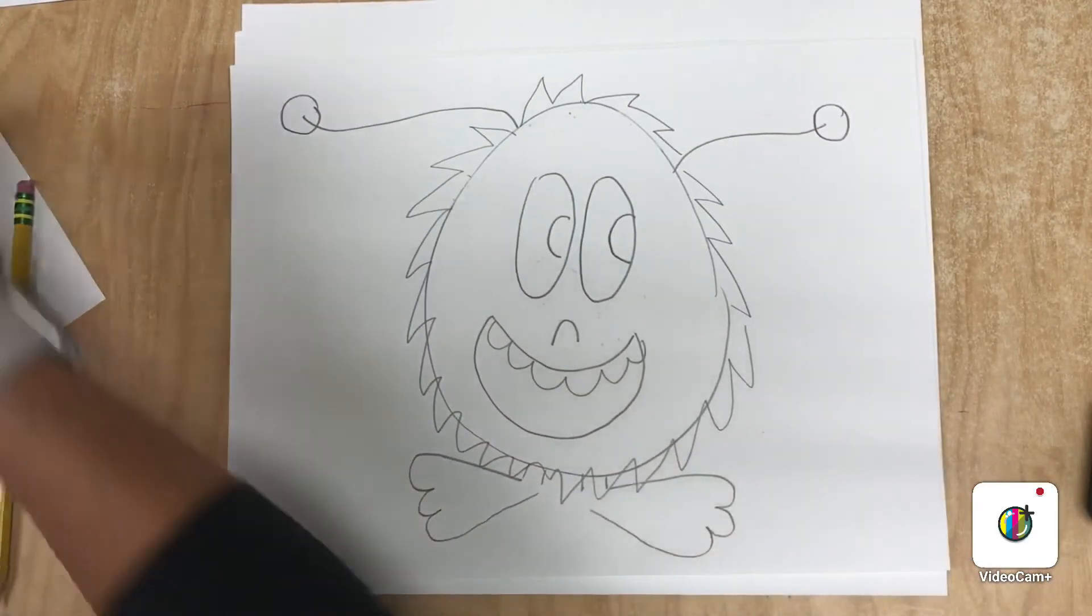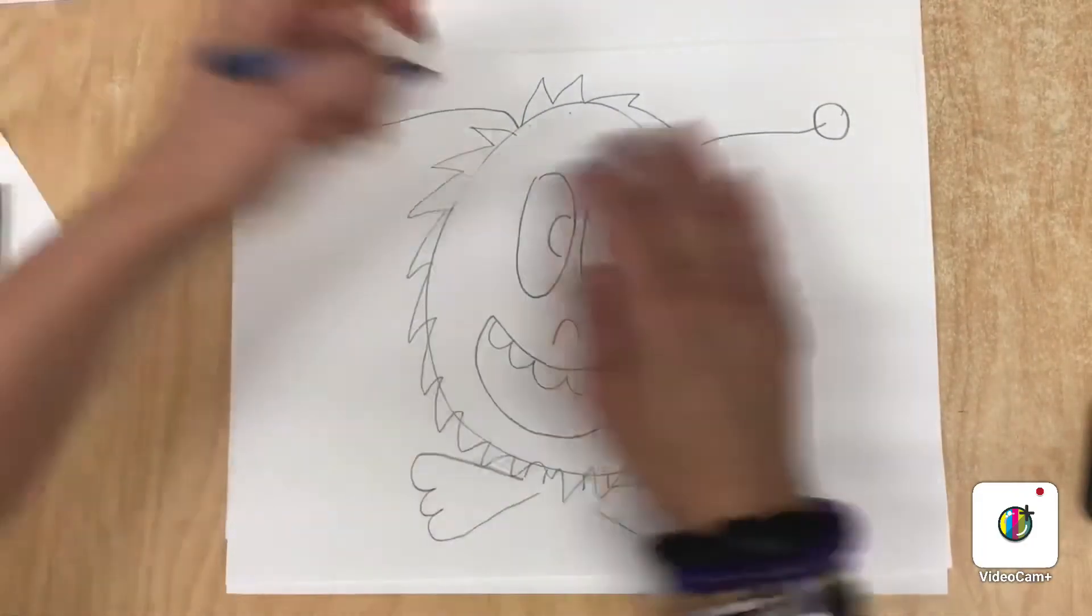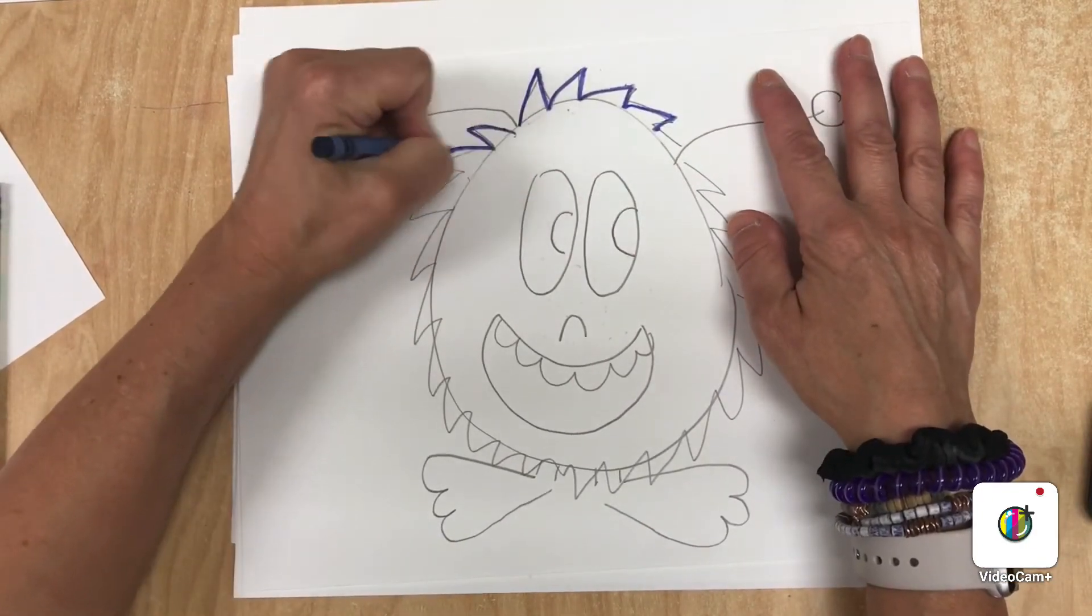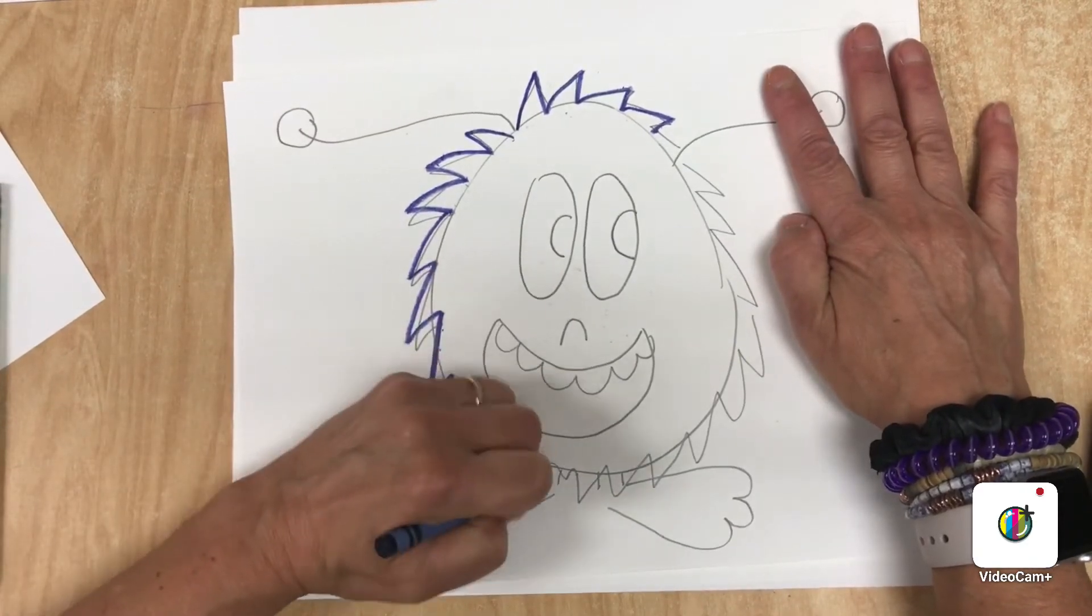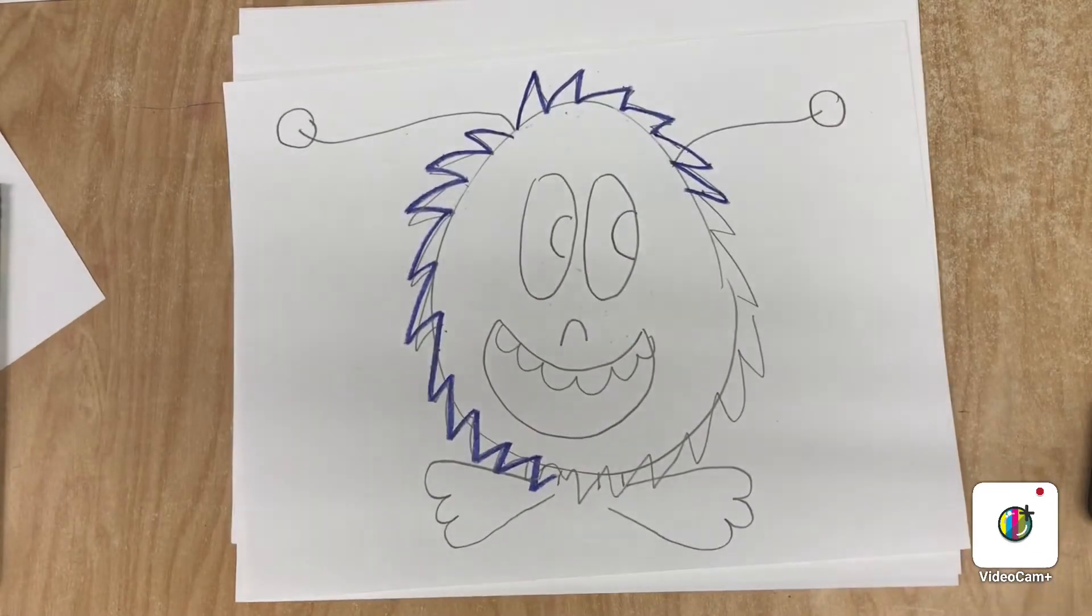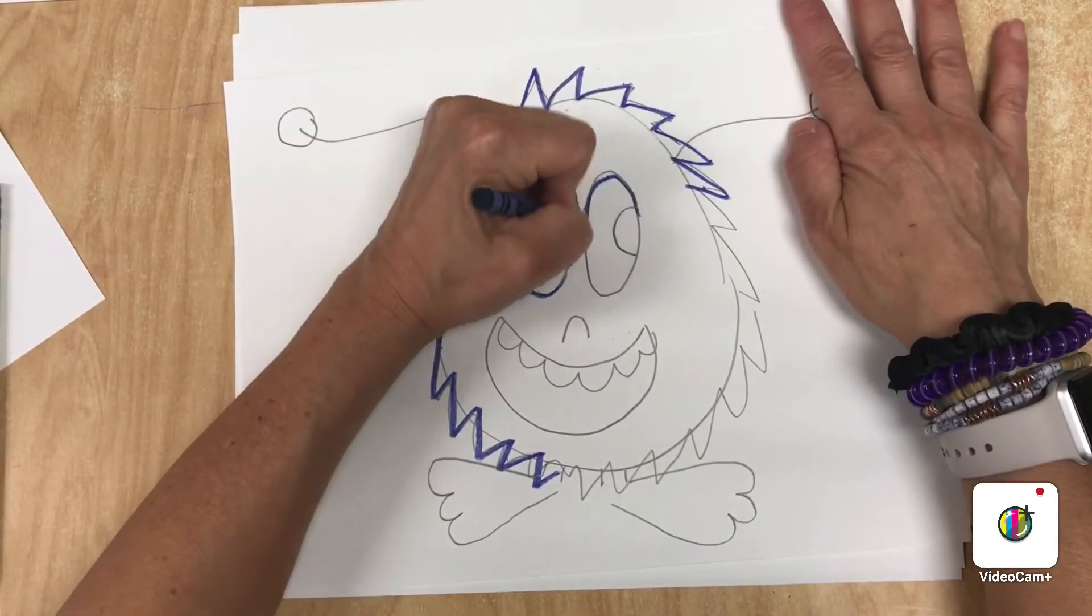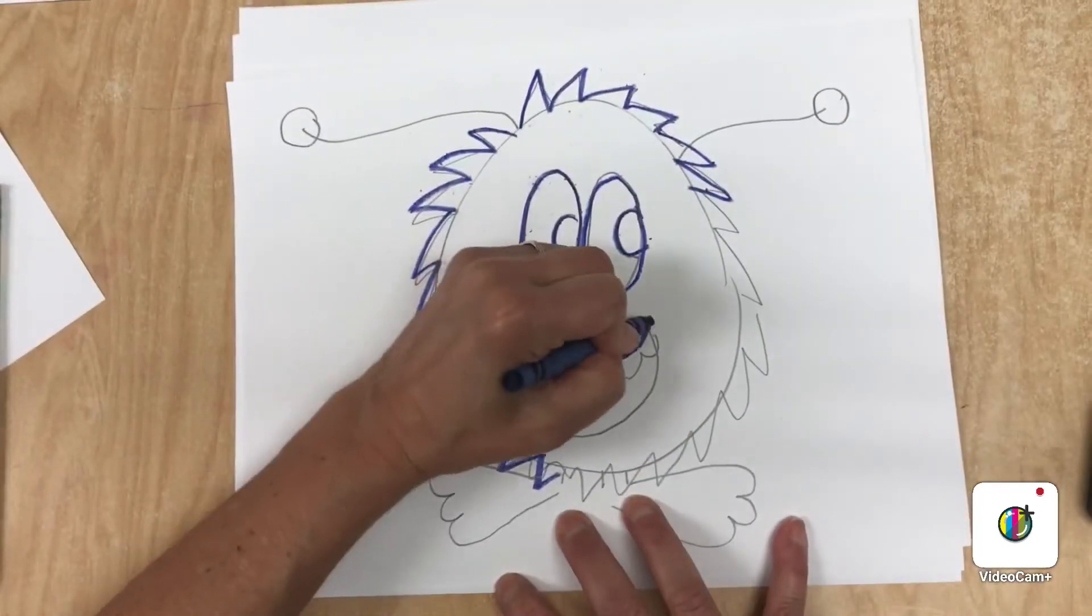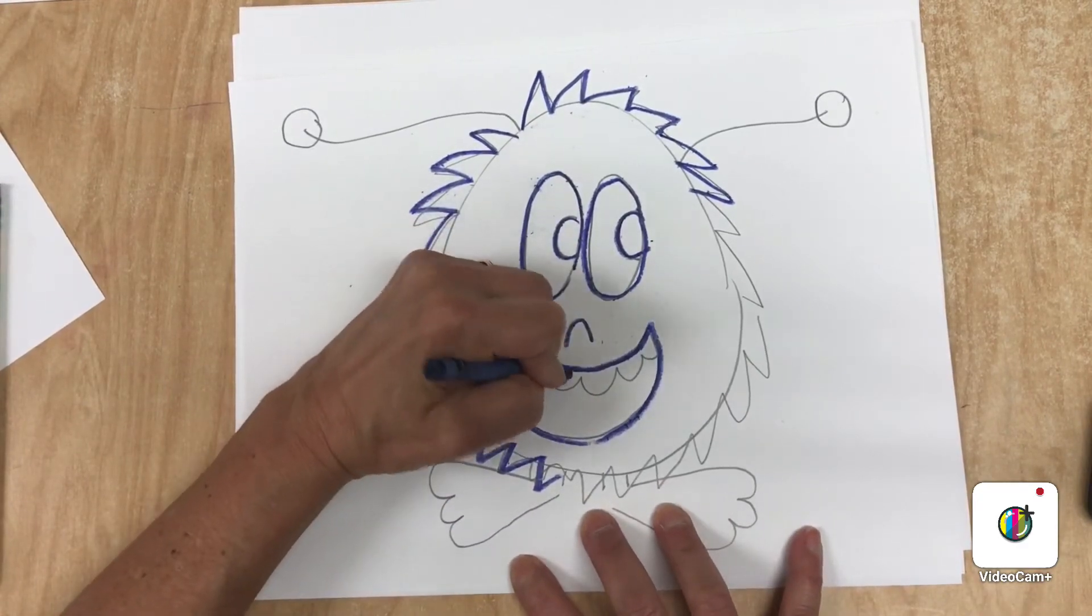The next step is to take a dark marker or crayon—it can be blue or black or anything you want—and go over your texture. So this one I'm not going over the circle, I'm going just over the zigzag texture. That's going to be your next step and outline, that means go over the lines with the same dark crayon. It can be black, brown, blue, anything that'll show up really well.